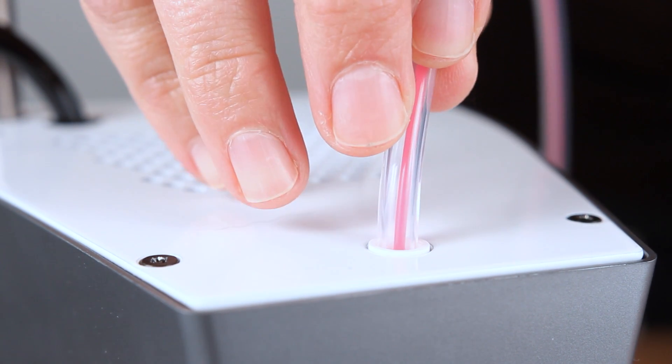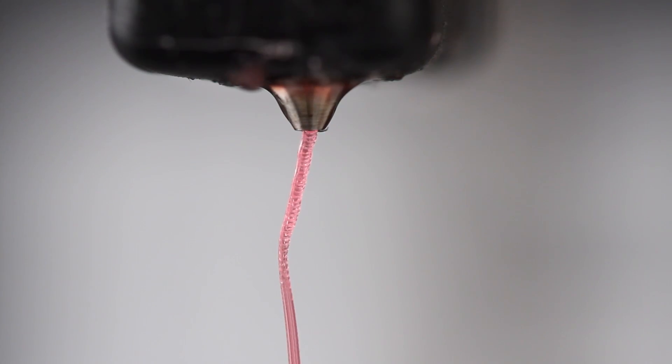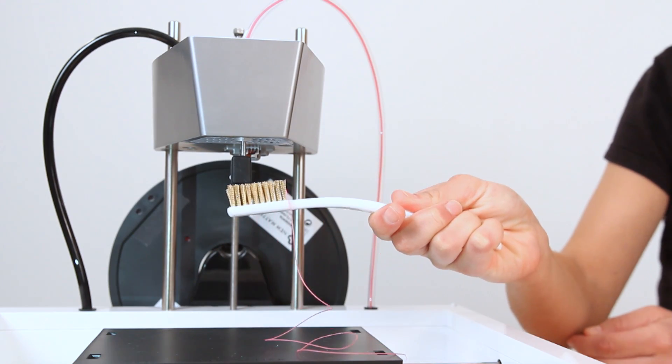Press the clear tube back into its home at the top of the carriage. When you start to see filament coming out of the hot end, push the front panel button. Wipe away any excess filament using your wire brush.